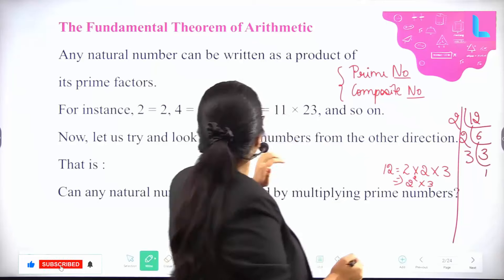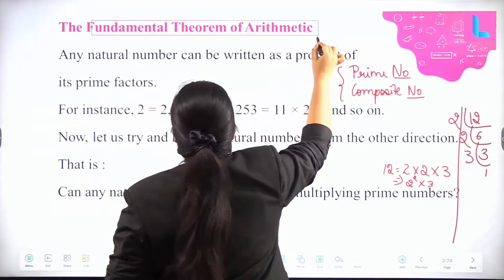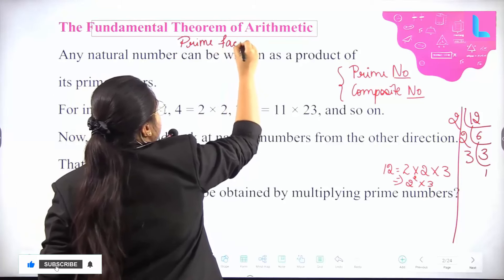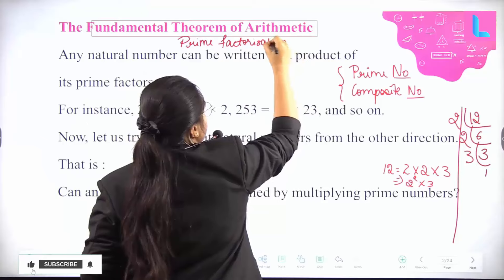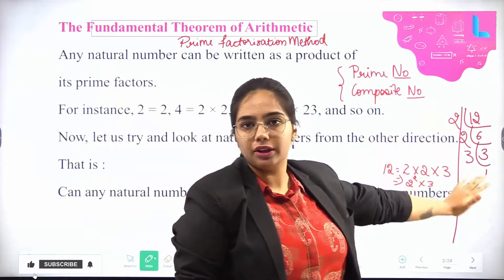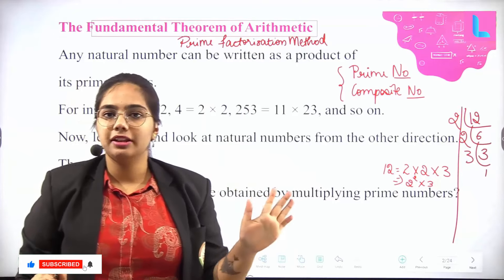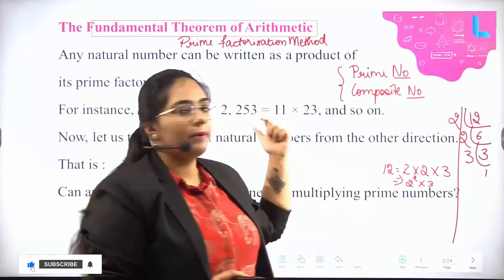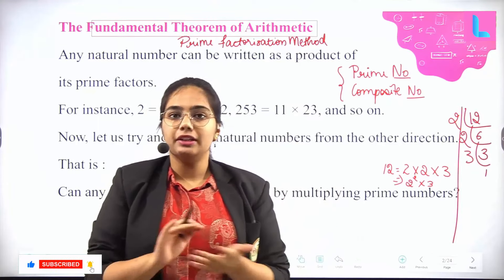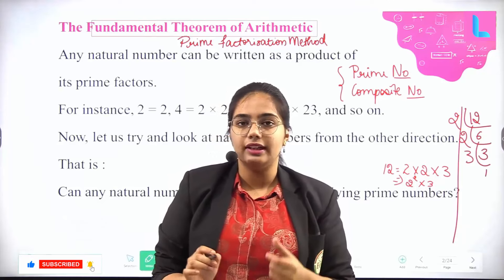This is the same process we will be using, and the new term we will call it is — the method we just solved, that is 12 = 2 × 2 × 3 — we call it the prime factorization method. It is just a fancy name: the Fundamental Theorem of Arithmetic is nothing but the same as the prime factorization method.